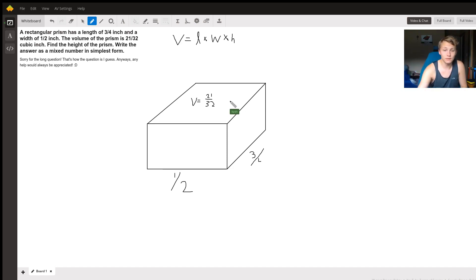And so let's fill in some numbers here that we know. We know that the volume is 21 over 32. This equals the length which is three-fourths times the height times the width, excuse me, which is one-half times the height, and we don't know the height just yet.